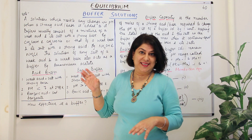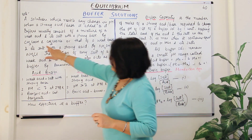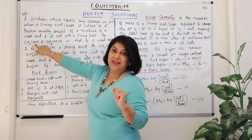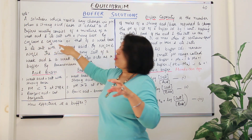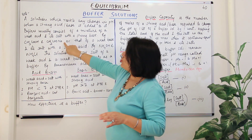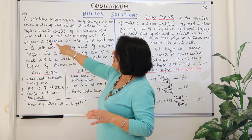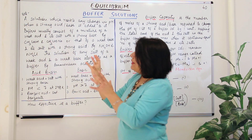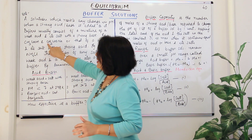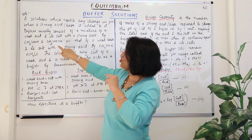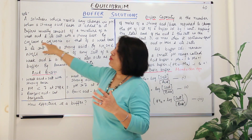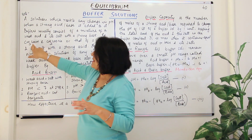If you take a weak acid like acetic acid and its salt with a strong base — the acetate ion forms a salt with a strong base, and sodium hydroxide is a strong base — so the salt formed with acetic acid would be sodium acetate. This mixture of acetic acid and sodium acetate, a weak acid and its salt with a strong base, acts as a buffer and is known as an acidic buffer.